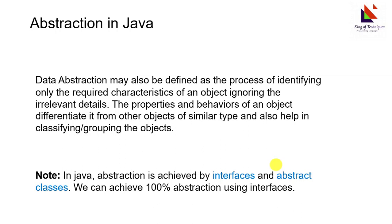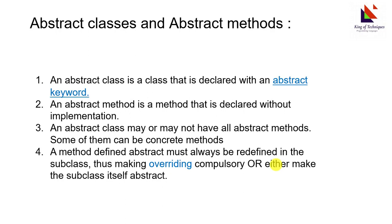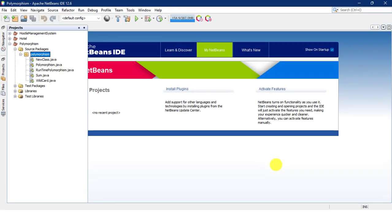This is what abstraction is. In Java, we achieve abstraction by interface and abstract classes. We can achieve 100% abstraction using interface, but abstract classes do not give 100% abstraction.